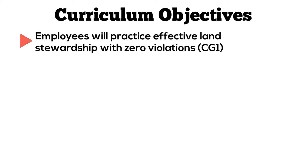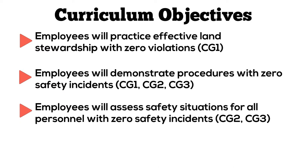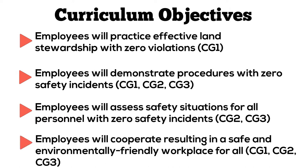The following are the overarching curriculum objectives on which this curriculum unit was based. Employees will practice effective land stewardship with zero violations. Employees will demonstrate procedures with zero safety incidents. Employees will assess safety situations for all personnel with zero safety incidents. And employees will cooperate, resulting in a safe and environmentally friendly workplace for all. If you notice the letter and number combinations, each aligns with the specific curriculum objective, showing alignment between the overarching curriculum goals and objectives on which the unit was based.